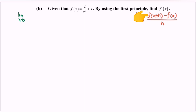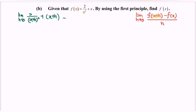Meaning that we need to substitute x plus h into x. So we will have 2 over (x plus h) squared plus (x plus h), minus for the function f(x), where we will have 2 over x squared plus x, all over h.